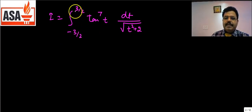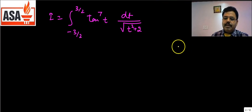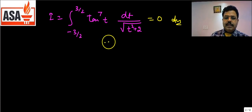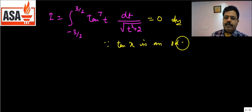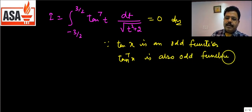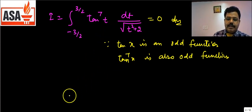Now observe this is a −a to a pattern. The question is whether it doubles or becomes zero. tan(t) is an odd function, and tan⁷(t) is also odd since the power 7 is odd. The denominator t² + 2 is an even function. So the overall integrand is odd ÷ even = odd. Therefore the integral equals 0.